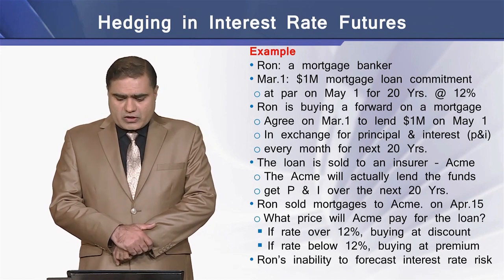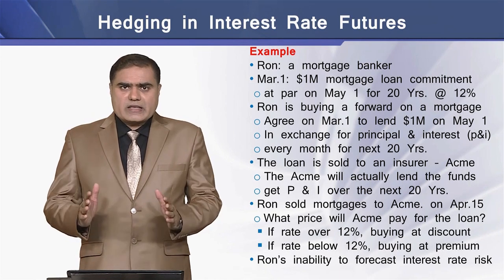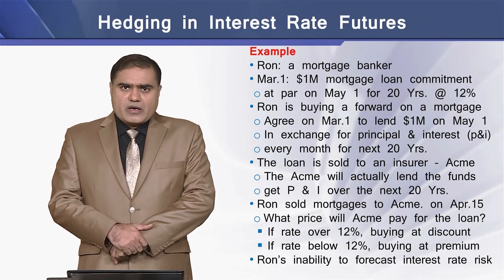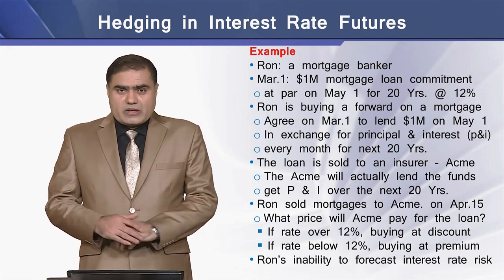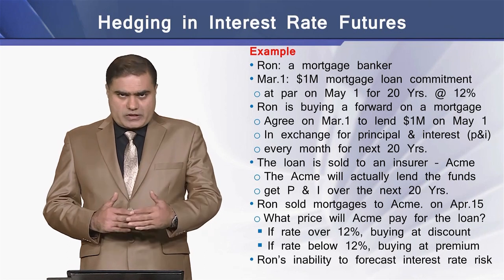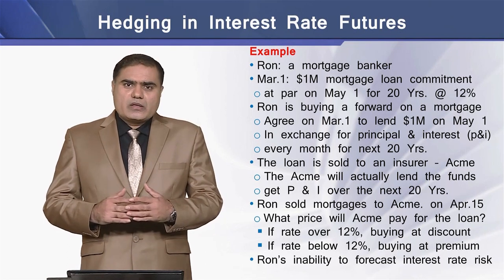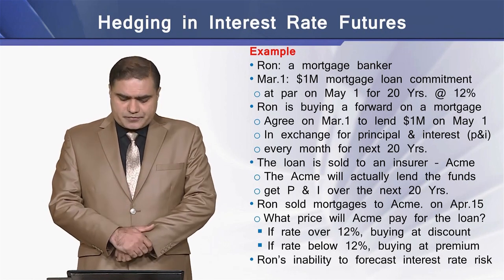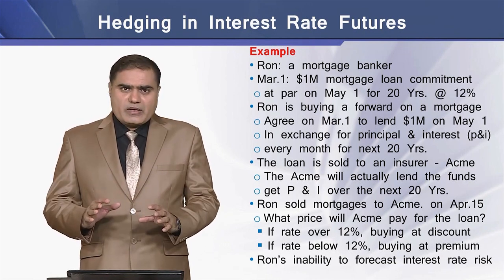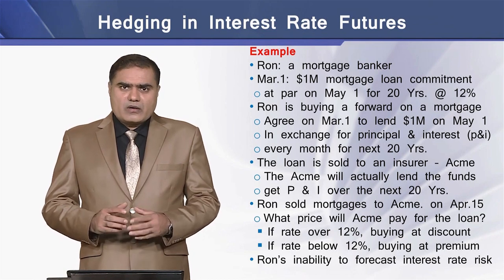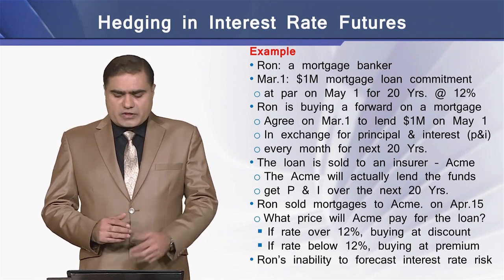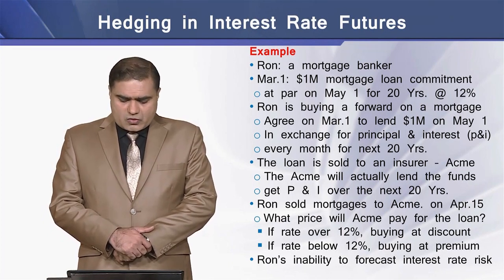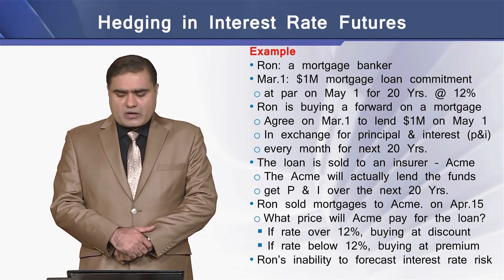This loan is sold to an insurance company named Aceman. Aceman will actually be paying the funds to the borrowers, meaning it is Aceman that is lending money to the home borrowers and Aceman will be receiving principal and interest payments on this lending for the next 20 years. So Ron has sold the mortgages to Aceman on April 15.